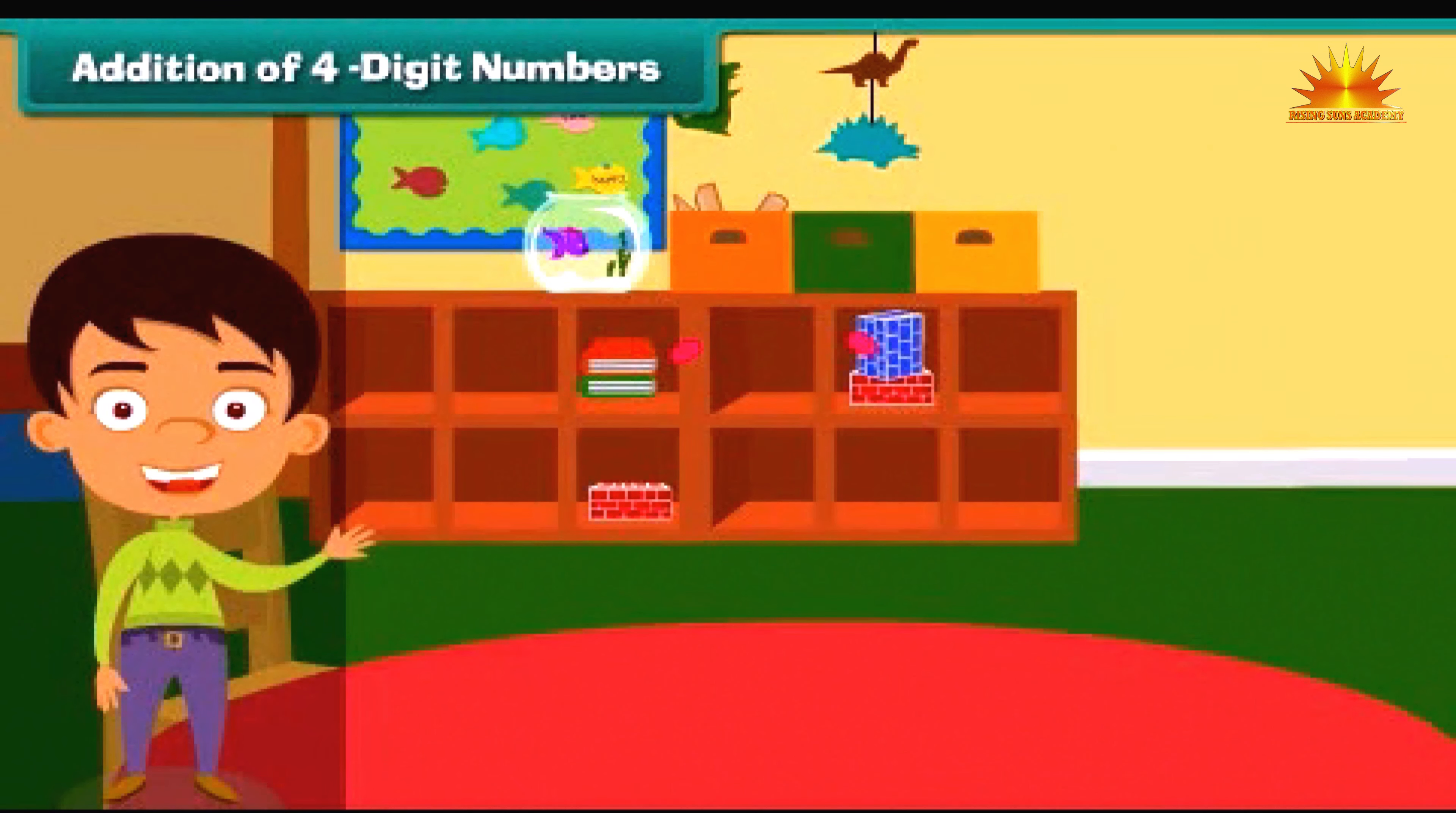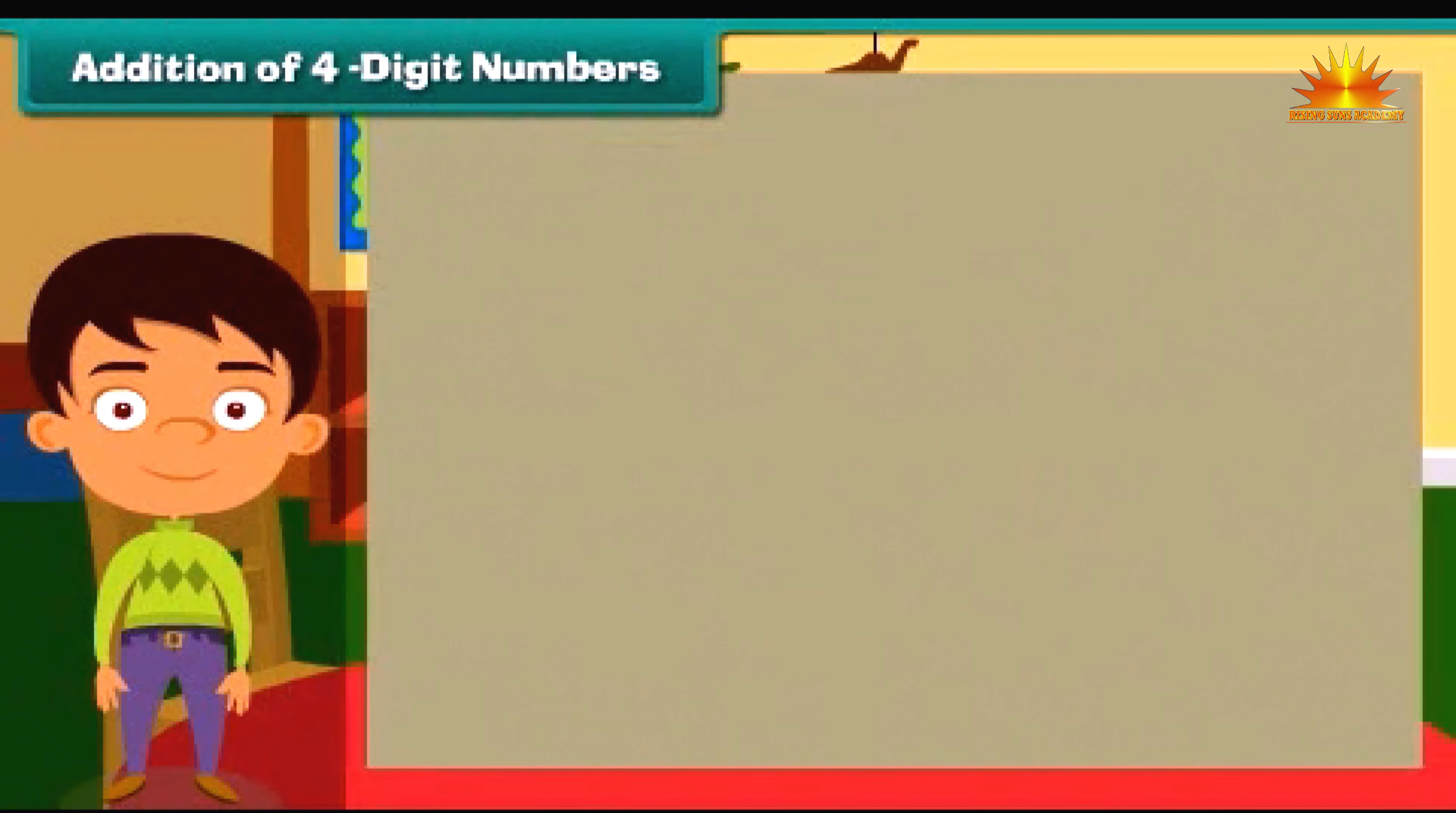Addition of four-digit numbers. The first problem that Ben picks to solve is to add given numbers: 4541 and 2316. Start solving the question by writing the numbers in these lines.